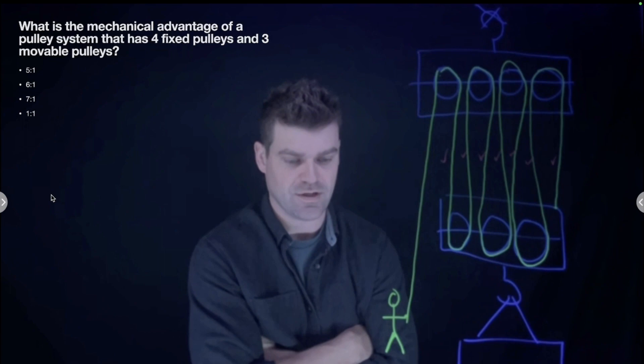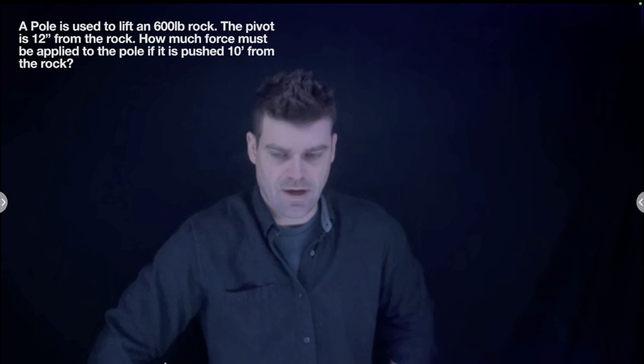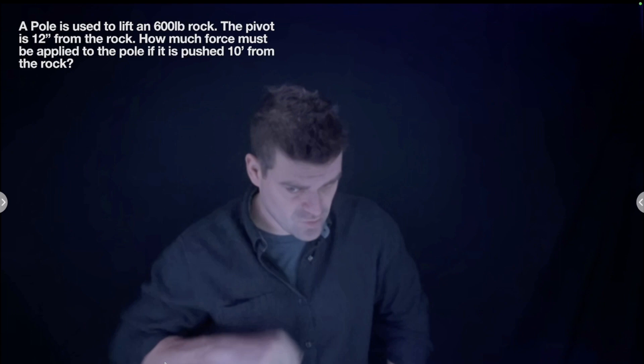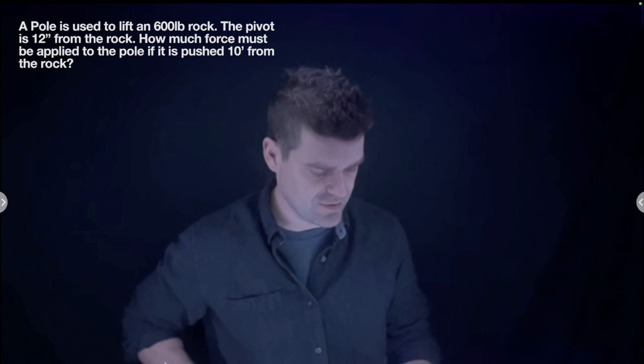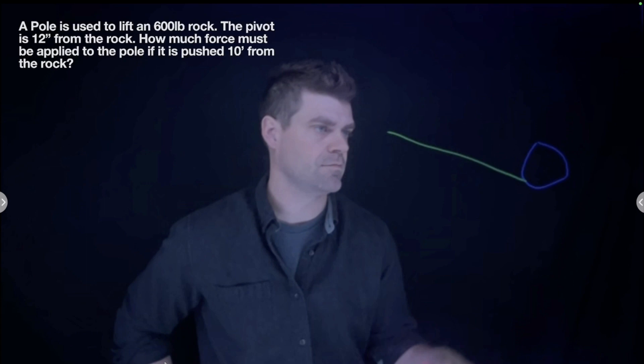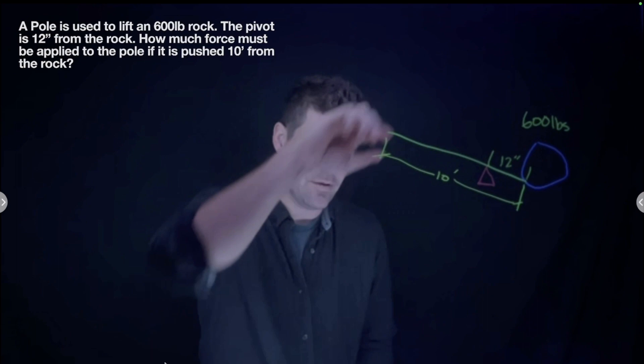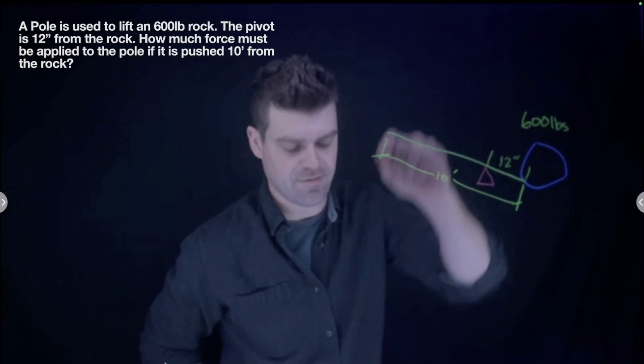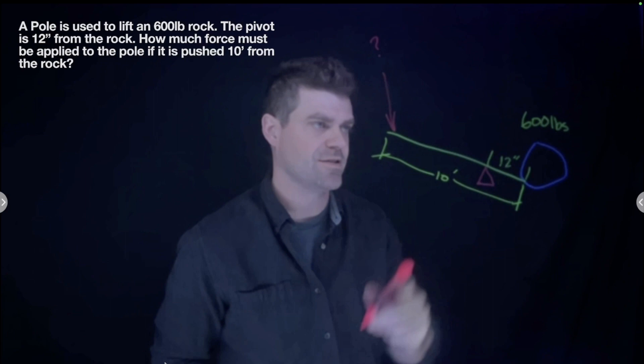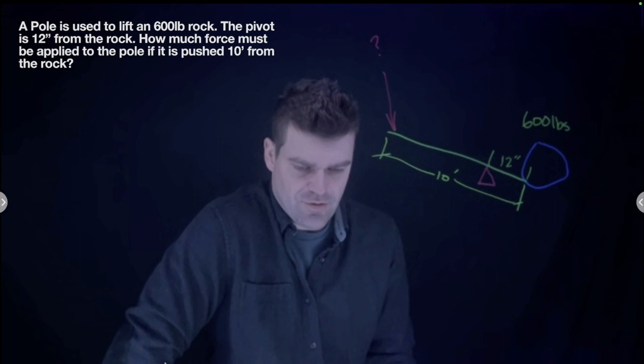Next question: a pole is used to lift a 600-pound rock. The pivot or fulcrum is 12 inches from the rock. How much force must be applied to the pole if it is pushed 10 feet from the rock? Let's start by drawing a picture. We're grabbing the lever and tilting up, and we need to figure out how much force it takes to lift this 600-pound rock. There's a simple formula you can apply to all lever calculations as well as hydraulic jack questions.